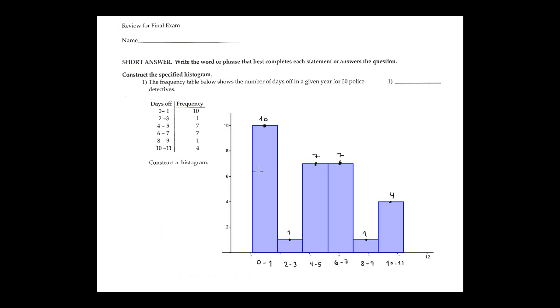Now I form the histogram — the histogram is easy. The first interval is 0 to 1 and 10 is the frequency. 2 to 3 is 1 also. This is the answer for the first one.